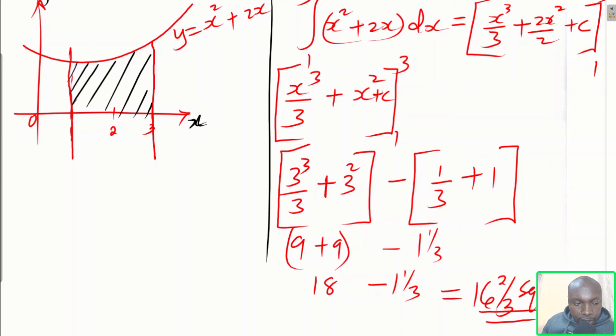That is how we find the area bounded by the curve y = x² + 2x, the lines x = 1 and x = 3, and the x-axis.